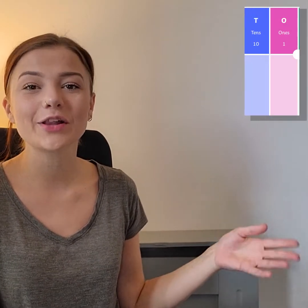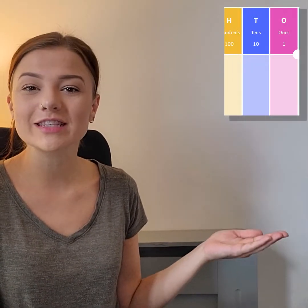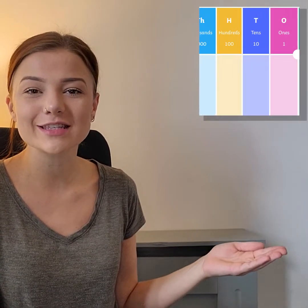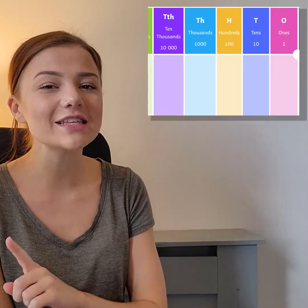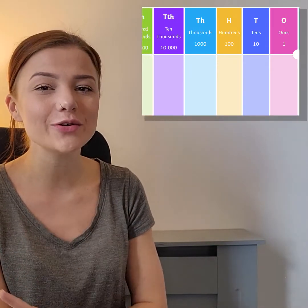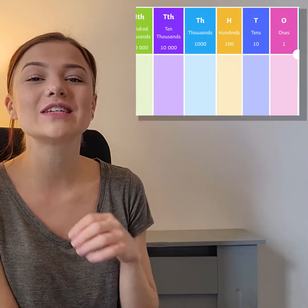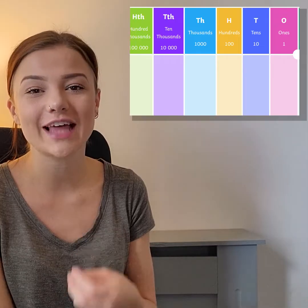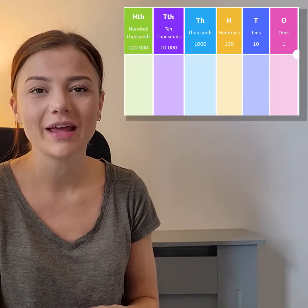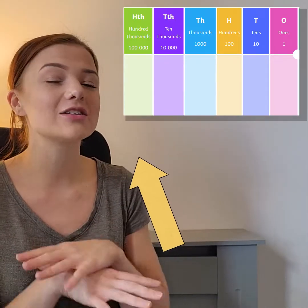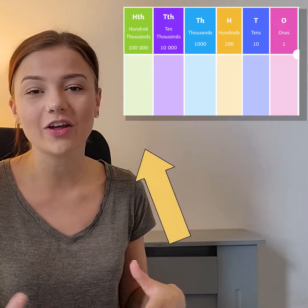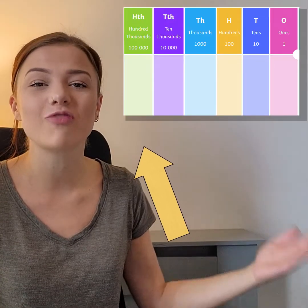Here is a place value chart that has a ones column, a tens column, a hundreds column, a thousands column, and a ten thousands column. You might have noticed the new column, which is the hundred thousands column. This is the column that has the highest value out of any of the other columns to its right.